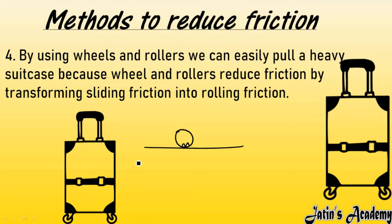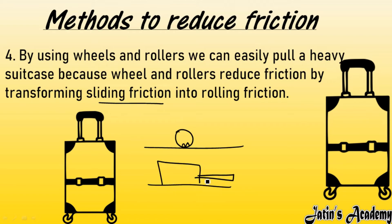That is why we use wheels or rollers on a heavy suitcase so we can easily apply force and it rolls over the surface. Sliding the bag is very difficult — when you pull it flat, there is more contact between the surface and the bag, causing more interlocking and more friction. So it is easier to roll something on the ground than to slide it.